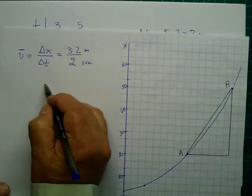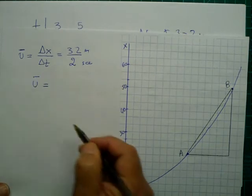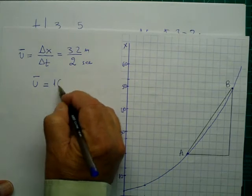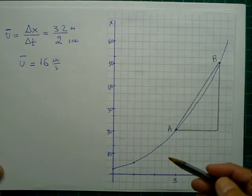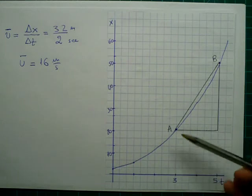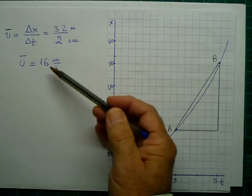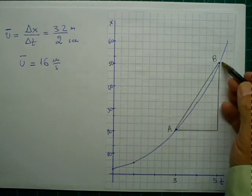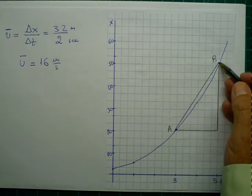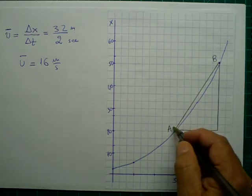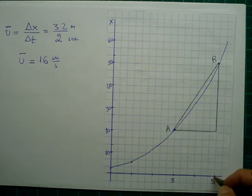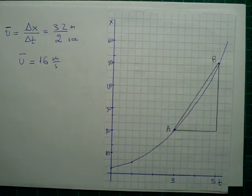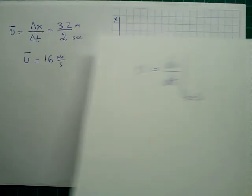So we get average velocity 32 over 2, which is 16 meters per second. As you can see on this graph, this 16 equals the slope of the straight line between these two points, (3, 21) and (5, 53). This is the slope of this straight line.